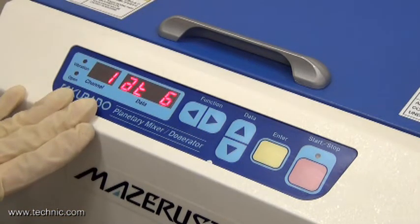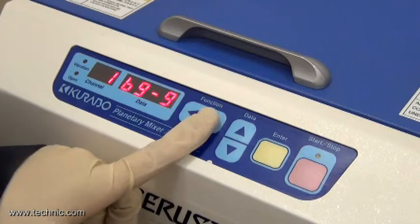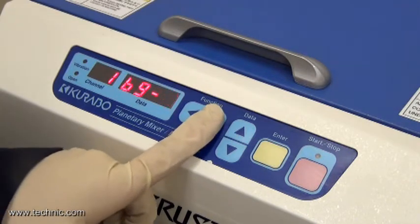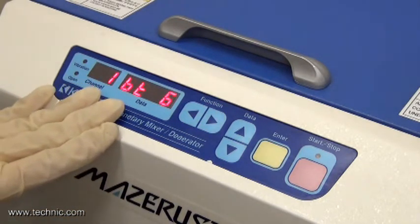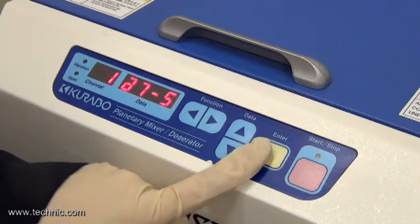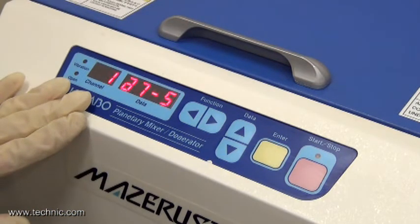For step B, we have set the revolution and rotation speeds at 9, which is full speed, for 1 minute. Now, all we have to do is press start.